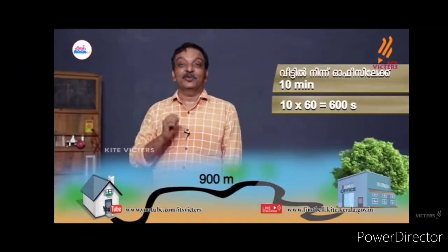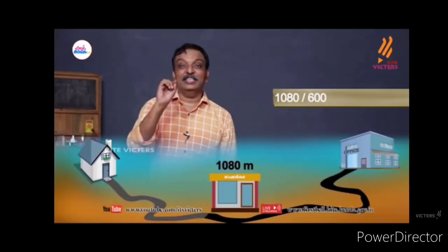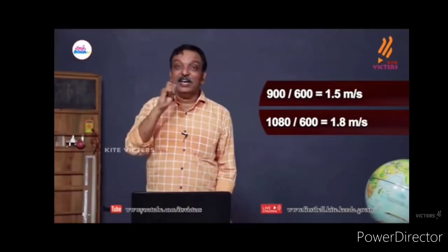If we calculate the speed, we will calculate the speed. Next, it is 1.5 meters per second. It is 600 meters. Then it is 600 meters per second. It is 1.8 meters per second. If we calculate the speed in the office, it is 1.5 meters per second and 1.8 meters per second.